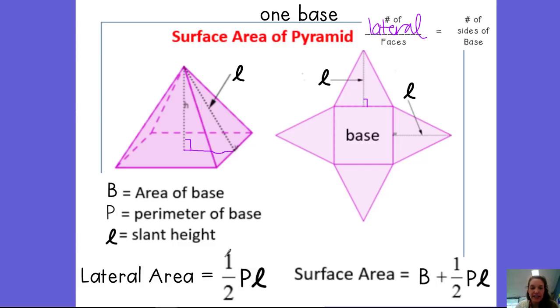So your lateral surface area is one half times the perimeter of the base times the slant height. So then your total surface area is just going to be whatever you got for your lateral surface area. And then you're just going to add in the area of the base. Remember, lateral surface area is everything not including the base. So all of those triangles. And then your total surface area, you're just going to add in whatever the area of your base is.